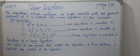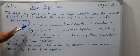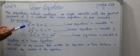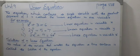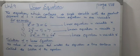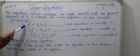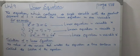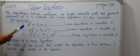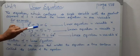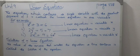When we find out the value of x and put it in the equation, the left hand side must be equal to the right hand side. The value of the variable that makes the equation a true statement is called the solution of the equation. Both sides must be equal for the equation to be true.